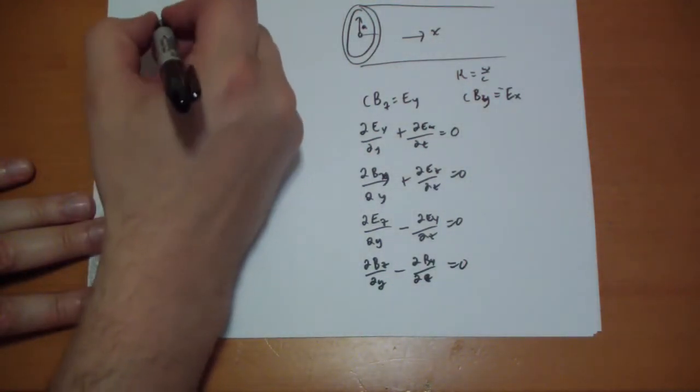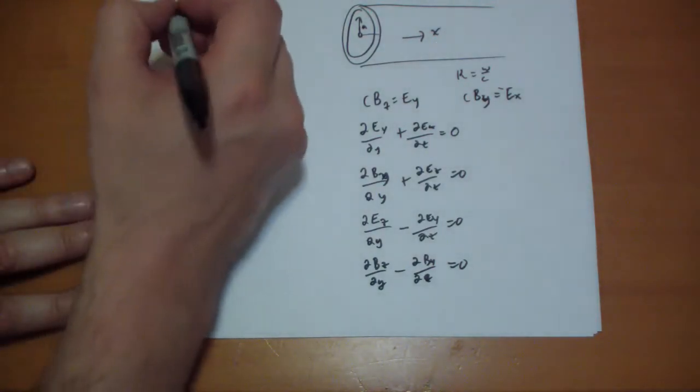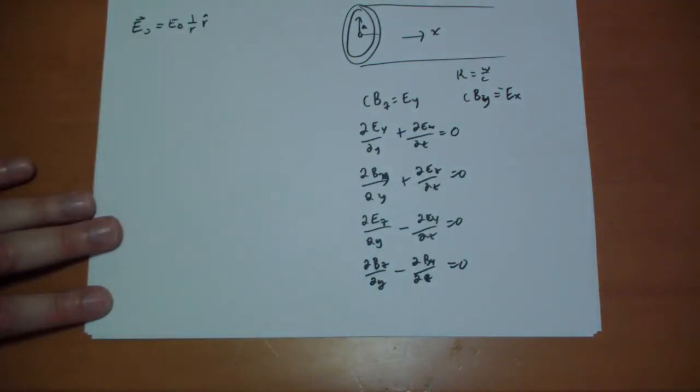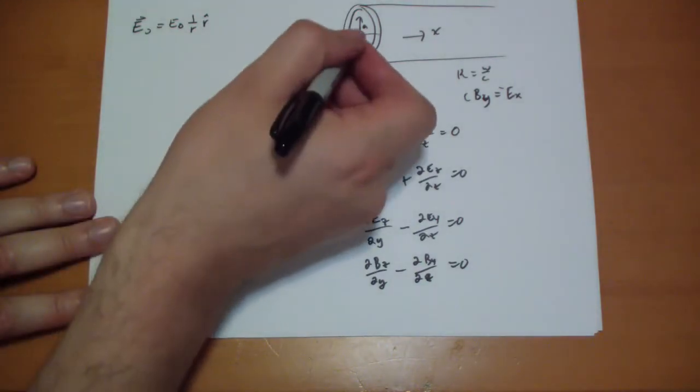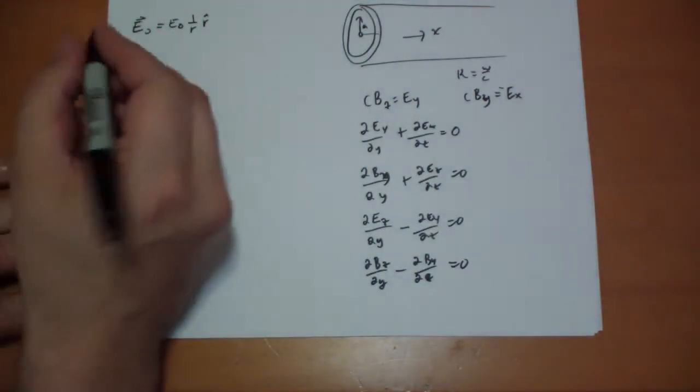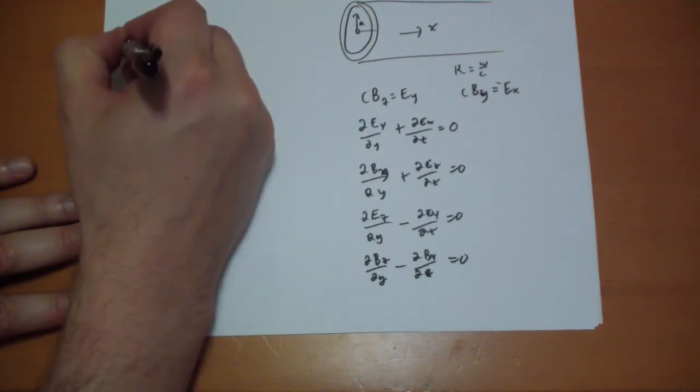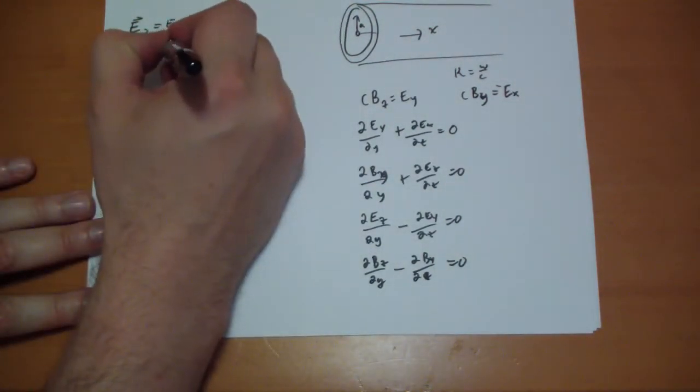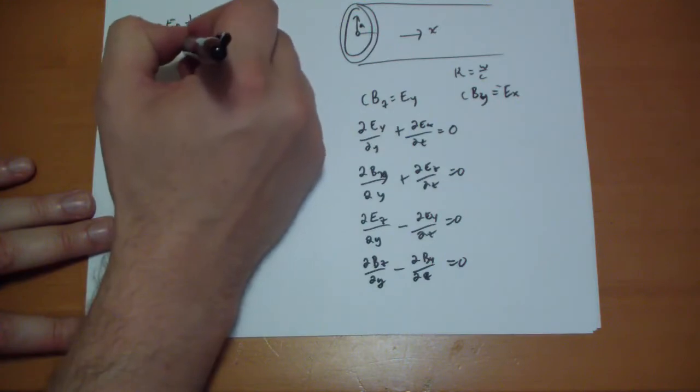E knot of your wave equation is going to be some magnitude divided by the radius, one over the r component where the axis is obviously aligned in the center there. And your B field, the constant component there is just going to be E knot over C, one over r in the phi hat direction.